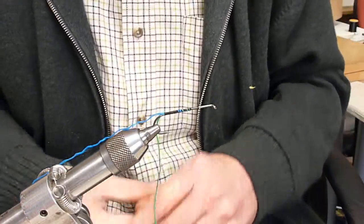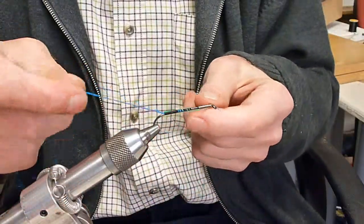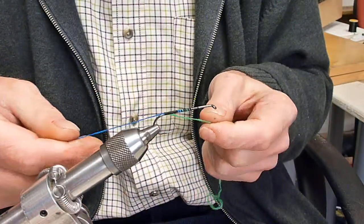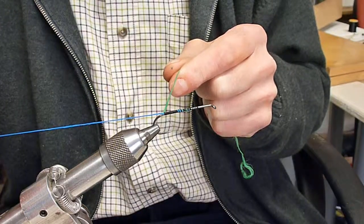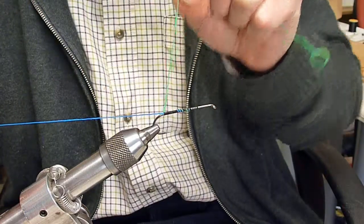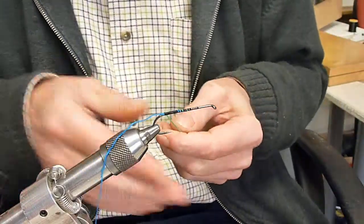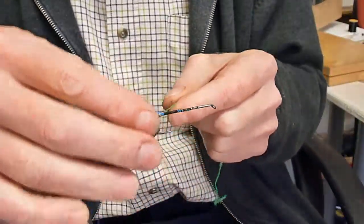We're going to show you how to do the shuffle weave, so for this purpose we're just using two different colored silks here. The blue one is going to be going underneath, and the green one is going to go over the top.